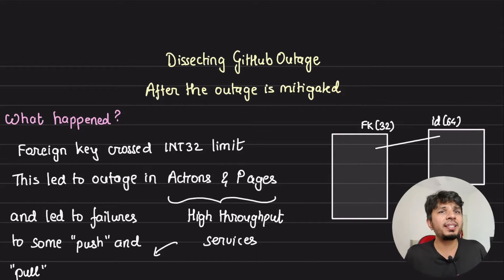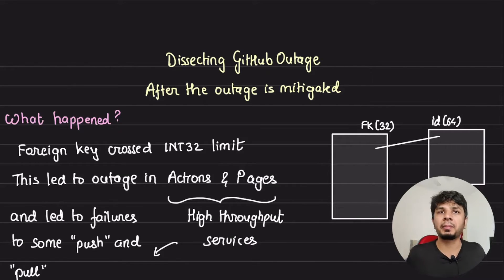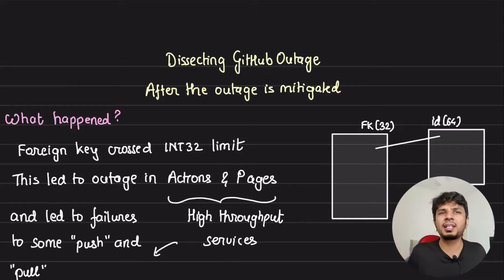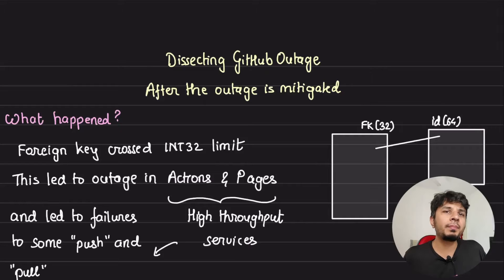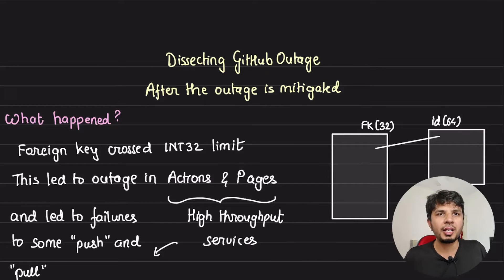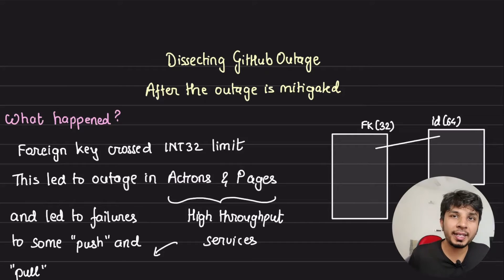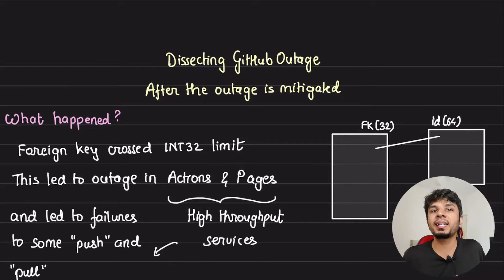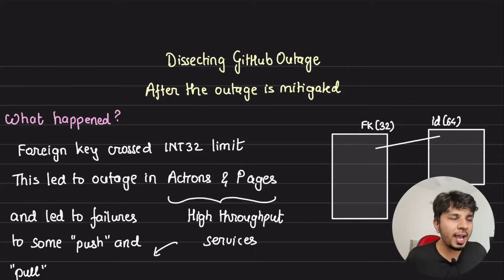Outages happen, and in such tense situations the main priority is to get the system back up and running. But is that it — is everything done once the service is up? Today let's spend some time talking about the aftermath of an outage. There are many things to take care of once the outage is mitigated, and in this video we dissect the GitHub incident, understand what happened, and look at a set of common practices that we follow to ensure complete closure.